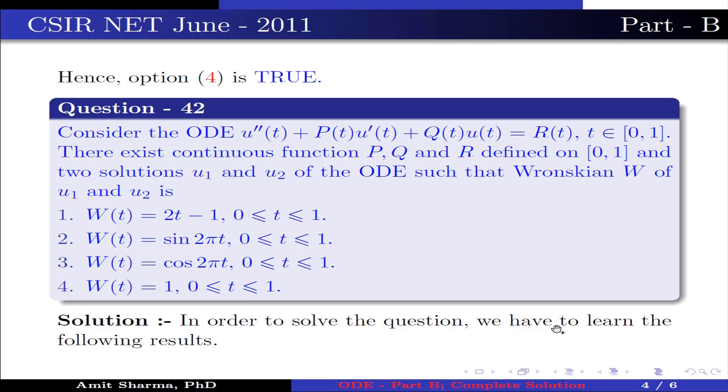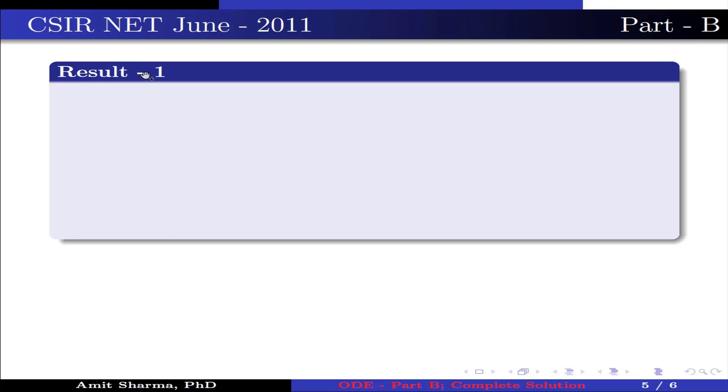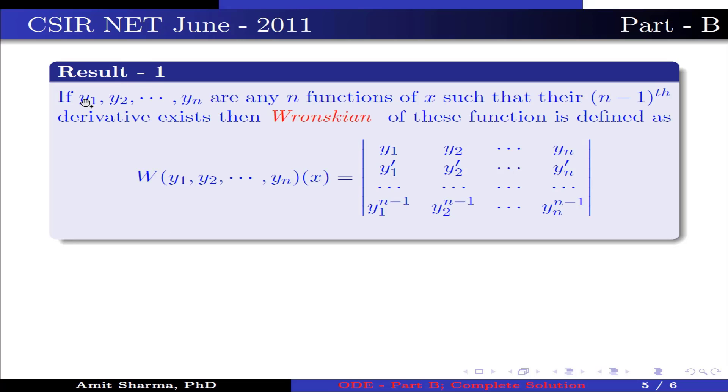In order to solve the equation, we have to learn the following results. Result number 1: if y1, y2, ..., yn are n functions of x such that their (n-1)th derivative exists, then the Wronskian of this function is defined as W(y1, y2, ..., yn)(x) equals the determinant of the matrix: y1, y2, ..., yn; y1', y2', ..., yn'; and so on; y1^(n-1), y2^(n-1), ..., yn^(n-1).